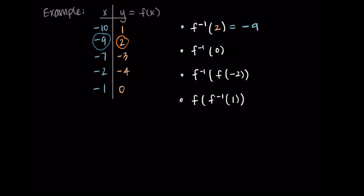Looking in the output column I find 2, and I see it corresponds to the input of negative 9, so f inverse of 2 is negative 9. Next, f inverse of 0 asks which input gives an output of 0. Finding 0 as an output, it corresponds to an input of negative 1, so the solution is negative 1. For these I like to remember: an input to the inverse function is the y value of the original function, so I'm looking in the right-hand column.